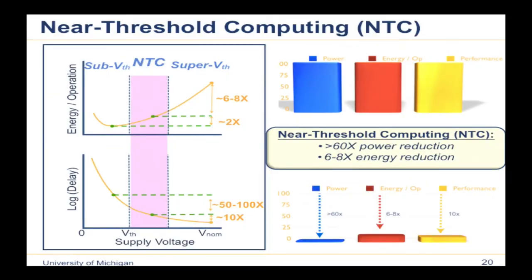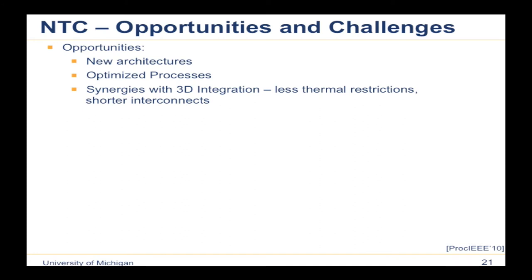So we started looking at the near threshold region. We asked: what if we back off slightly on aggressiveness and instead target maybe a 6–8x improvement in energy efficiency, at a spot where the delay trade-off is much more reasonable at 10x? That still gives us a 60x power reduction and a 6–8x energy reduction, and we can use architectural techniques to overcome the performance loss and get it on par with regular systems. In the Proceedings of the IEEE in 2010, we laid out this near threshold region, its challenges and opportunities.